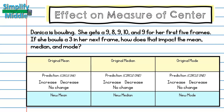Let's try this again with a new data set. Danica is bowling — she gets a 9, 8, 9, 10, and 9 for her first five frames. If she bowls a 3 in her next frame, how does that impact the mean, median, and mode? For this one, I know I'm going to be adding a new number. Go ahead and pause the video to find the mean, median, and mode and make a prediction.